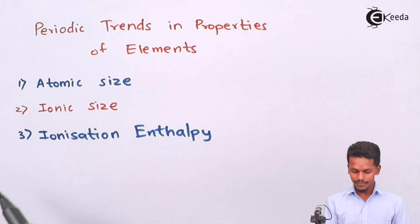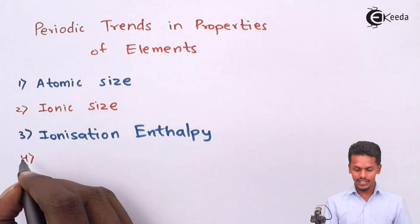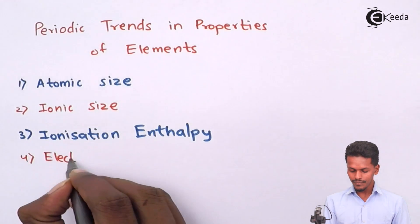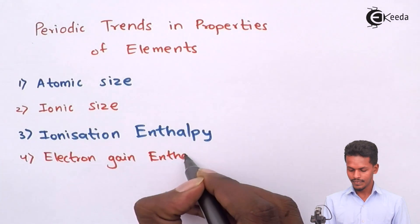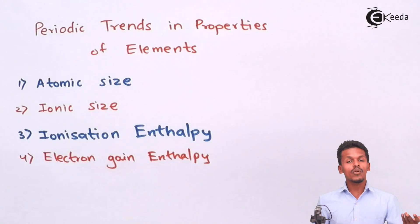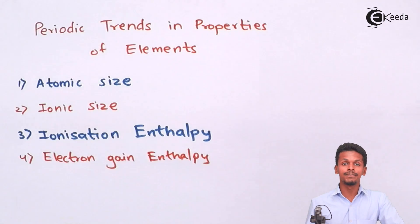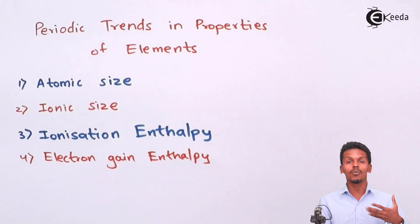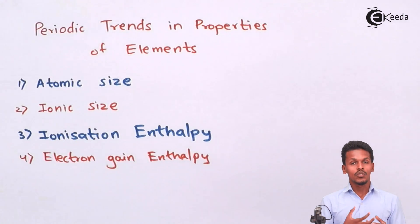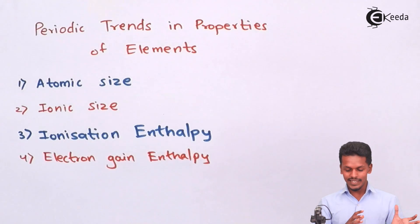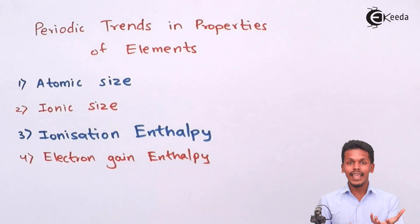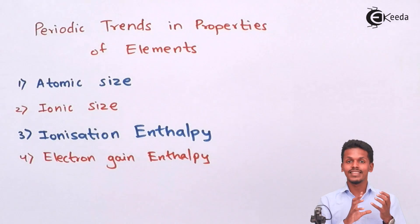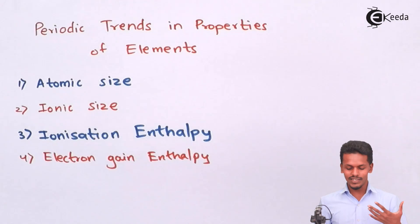The fourth property is electron gain enthalpy. Electron gain enthalpy is the energy that is released when an electron is accepted by an atom or by an ion. As the name suggests, while gaining an electron there is an enthalpy change, and that is known as electron gain enthalpy.